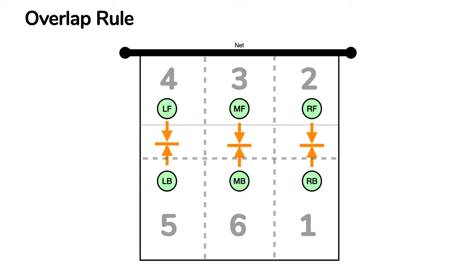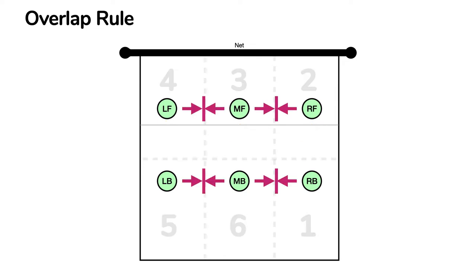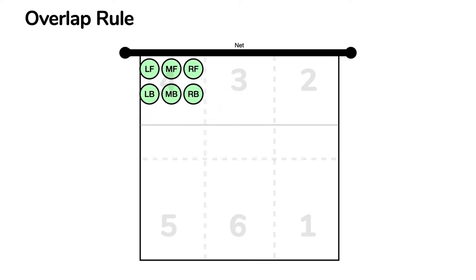As a back row player, you can't line up in front of the player in front of you — you can't get closer to the net than them. So the player in position 4 can't be behind the player in 5, the player in 3 can't be behind the player in 6, and so on. We'll have orange arrows throughout the next few diagrams to show you where you can't overlap. You also can't cross over the player next to you. The player in 4 can't go to the right of the player in 3 before the ball is contacted, and the player in 2 can't be to the left of the player in 3. The player in 3 has to stay between those two. Same goes for the back row.